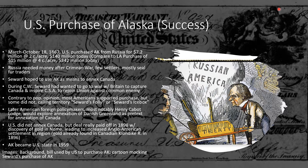Contrary to popular opinion, Americans were generally pretty happy with the Alaska purchase. They thought it was a good deal, although some referred to it as Seward's Folly or Seward's Icebox. Americans tended to support the Alaska purchase and knew things like the seal fur trade were going to be very lucrative. Later foreign policy makers, most notably Henry Cabot Lodge, would explore annexing Danish Greenland as a pretext for annexing Canada. The US does not annex Canada, but the purchase of Alaska really pays off in 1898 with the discovery of gold in Nome, Alaska, leading to increased Anglo-American settlement in the region. Alaska becomes a state in 1959.